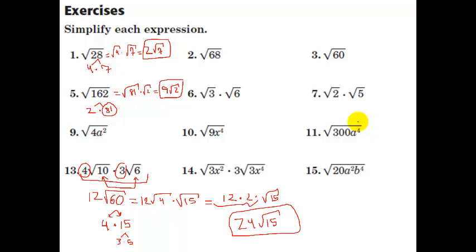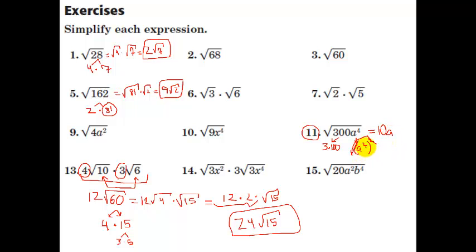Let's try one more with variables — number 11: square root of 300a to the fourth. 300 can be broken into 3 times 100, and a to the fourth is already a perfect square — it's a squared, squared. The square root of 100 is 10. The square root of a squared squared: the square root cancels the squared and we're left with a squared. The 3 under the radical has no perfect square, so it stays inside. So the square root of 300a to the fourth is 10a squared root 3.